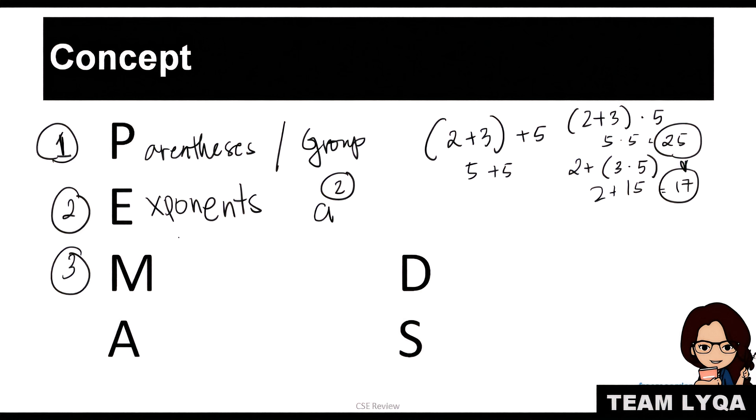Third step na gagawin ninyo is yung multiplication and division. Bakit sila magkatabi? Kasi either way, pwede. Ibig sabihin kung merong multiplication tsaka division, kahit unahin nyo yung multiplication, okay lang din. Unahin nyo yung division, okay lang din. Interchangeable siya. Ang importante lang is that yung multiplication division, uunahin nyo siya doon sa pang-apat, which is addition and subtraction.